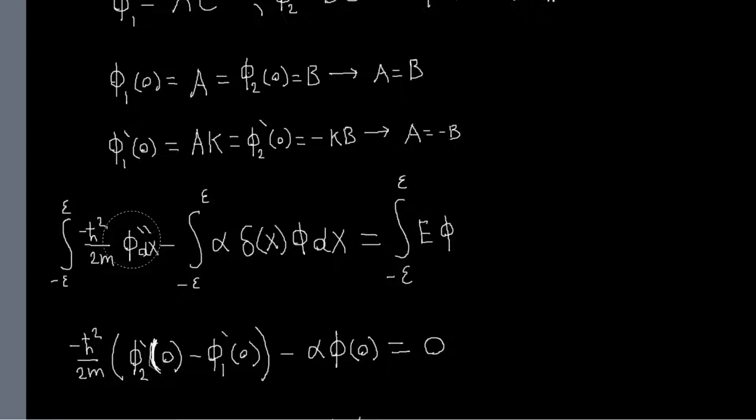So the first term has the second derivative of phi, so the integral of that will just be the first derivative of phi. And then we'll have phi prime evaluated at epsilon minus phi prime evaluated at minus epsilon. But epsilon is to the right of zero, so we're taking the limit as epsilon goes to zero from the right, so that means we're going to want to use phi two prime of zero, because phi two is to the right of zero. And then similarly, the other one will be evaluated at minus epsilon, so we'll take the limit as epsilon goes to zero from the left, so we'll use phi one. So that's that term.